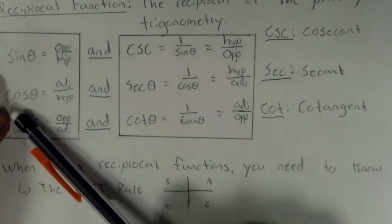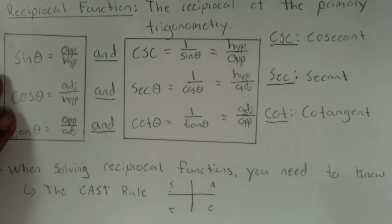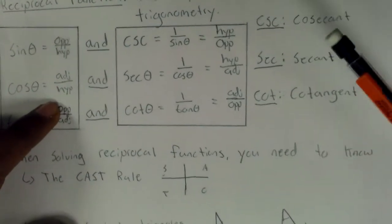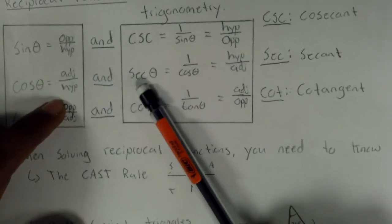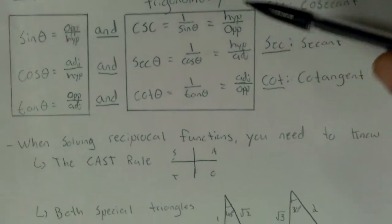The second primary trigonometry ratio is cos of theta is equal to adjacent over hypotenuse. And the reciprocal would be secant, or SEC, is equal to 1 over cos of theta or equal to hypotenuse over adjacent.